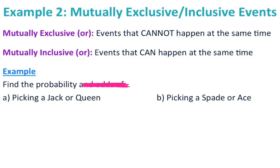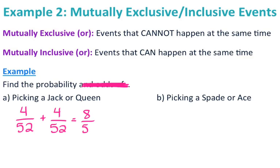Find the probability of picking a jack or a queen. Can you have a card that is both a jack and a queen? No, you can't — so these are mutually exclusive events. The probability of picking a jack is 4/52, and the probability of picking a queen is 4/52. So the probability of picking a jack or a queen is 8/52, which reduces to 2/13. Don't forget to reduce your fractions.